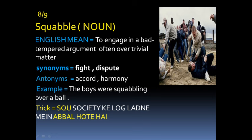Next word is 'Squabble.' Squabble is used as a noun. Its English meaning is to engage in a bad-tempered argument — meaning a fight or quarrel, often over a trivial matter. The synonyms of squabble are fight and dispute. The antonyms are accord and harmony — harmony is a very important antonym of squabble. Example: 'The boys were squabbling over a ball' — the boys started fighting over a ball, which is a very trivial thing.